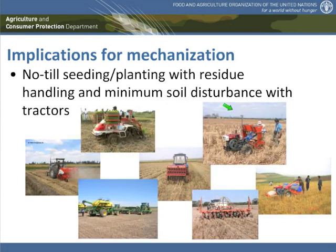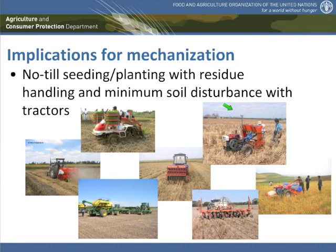Coming to tractor equipment, here we find equipment for no-till seeding with minimum soil disturbance across quite a range of sizes — starting with single-axle tractors on the right side, going to fairly small tractors in the center at around 30-40 horsepower, and then going up to 400 horsepower. There is really a continuum of options for no-till tractor-based pulled or mounted equipment for planting and seeding.